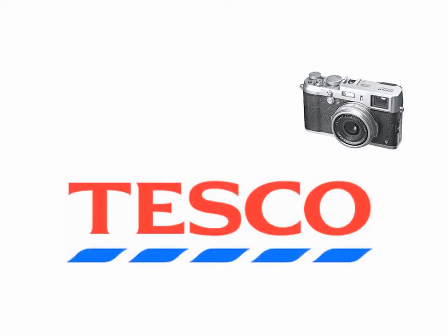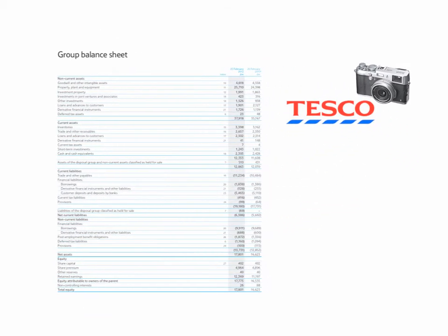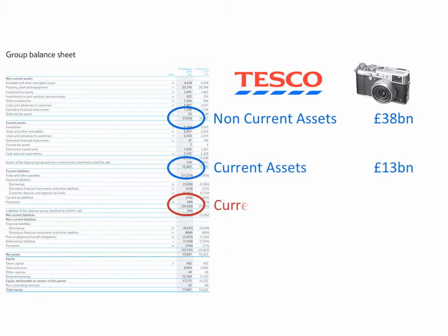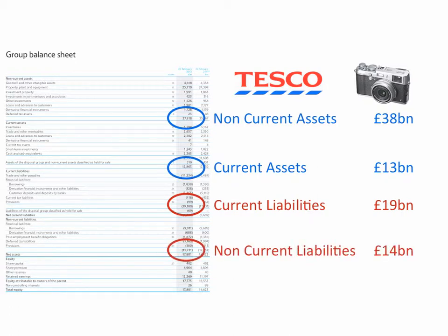If we look at the balance sheet of Tesco, we can identify the five main elements. Non-current assets are £38 billion. Current assets are £13 billion. Current liabilities are £19 billion, and non-current liabilities are £14 billion. If we deduct the total liabilities of £33 billion from the total assets of £51 billion, we get the net assets of £18 billion, which is equal to the shareholders' funds of £18 billion.